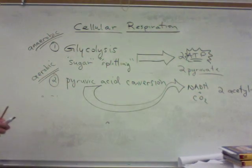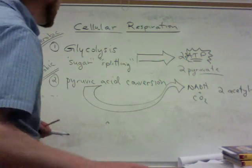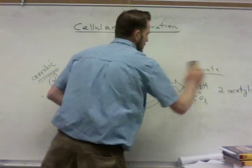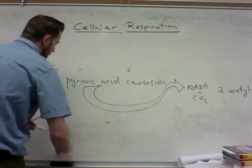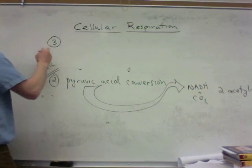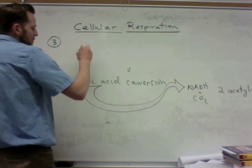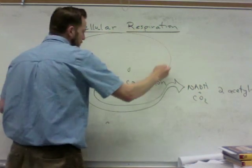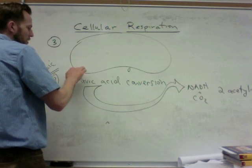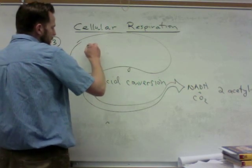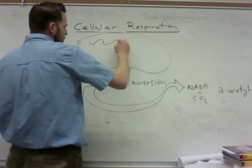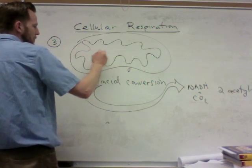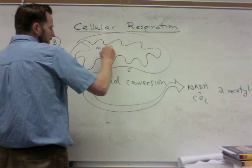The third step in cellular respiration is also aerobic — it needs oxygen and happens inside the mitochondria. The third step is called the citric acid cycle. The citric acid cycle happens in the matrix of the mitochondria, inside the mitochondria with its double membrane.